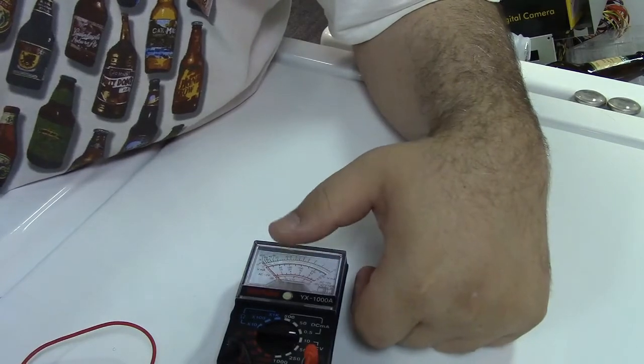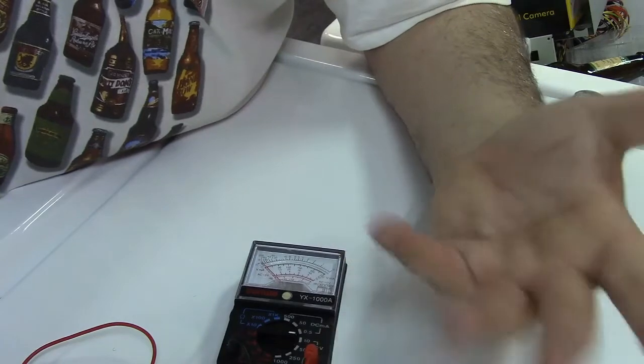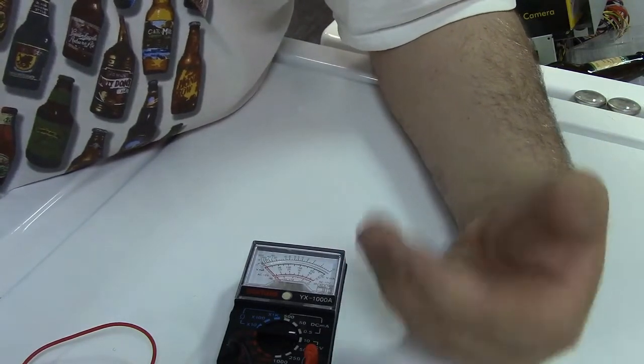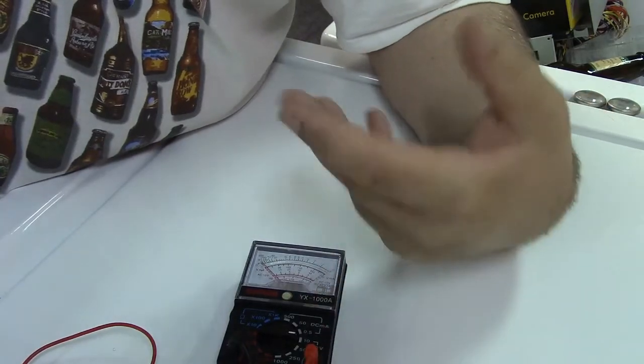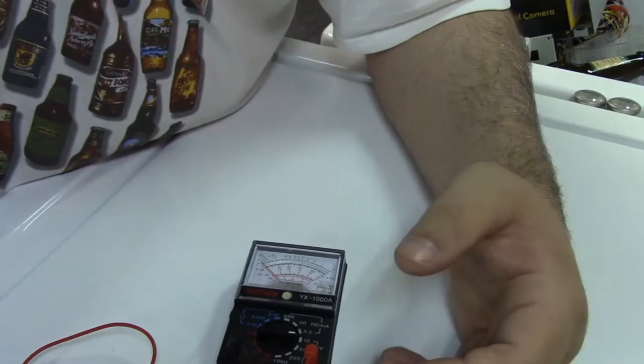And that will give you a lot more information seeing that than it will with the numbers changing. Because on a digital multimeter, when the numbers change, there's only so many samples per second that it changes to.